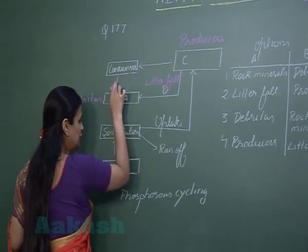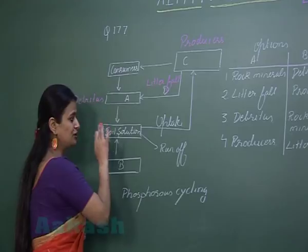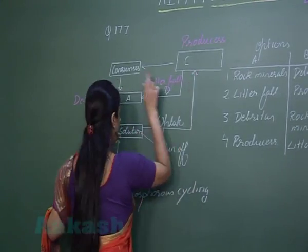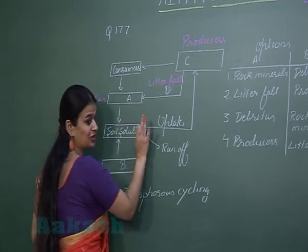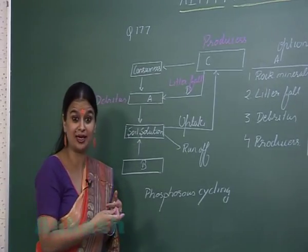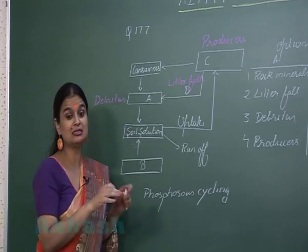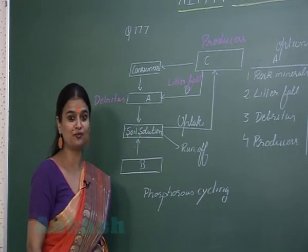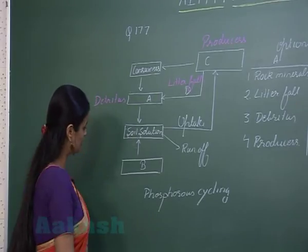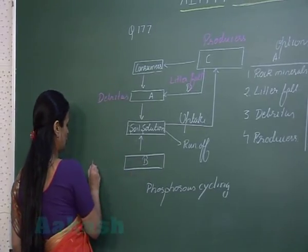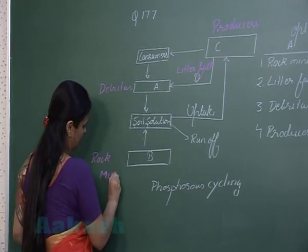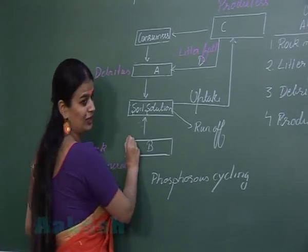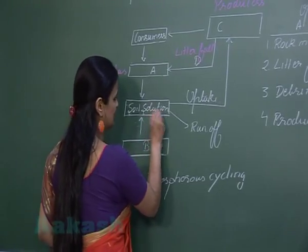The phosphorus cycle is an imperfect cycle — in it, uptake is more and the replenishment of phosphate in the soil solution is less. This means a deficiency of nutrients is created. This deficiency is fulfilled by our reservoir pool, which here is rock minerals. Through the weathering of rock minerals, the deficiency is fulfilled and phosphate is added back into the soil solution.